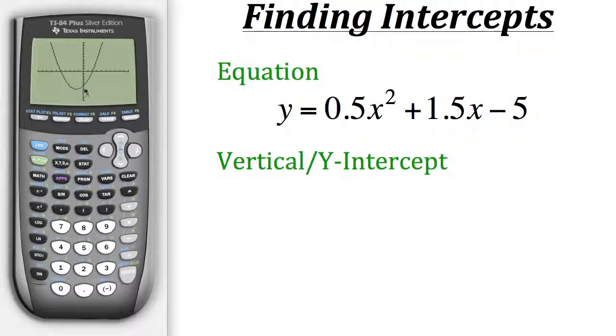Now in order to get that point we need to know its x and y values. Well if we're on the vertical axis or the y-axis we know that our x value will be 0 because we're not on the positive side of the x-axis or the negative side. We're right on the center giving us an x value of 0.